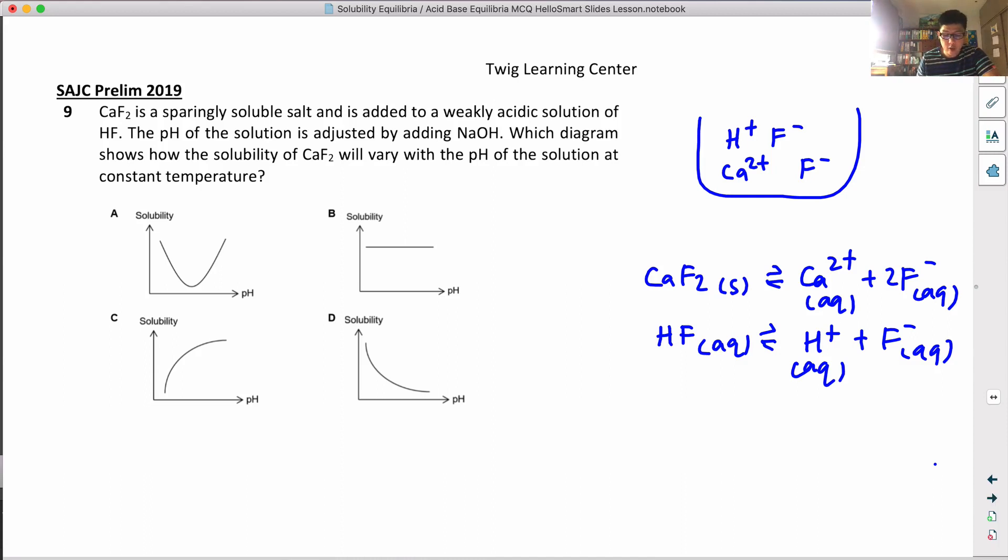Calcium fluoride is a sparingly soluble salt added to a weakly acidic solution. In this solution, there's H⁺, F⁻, and Ca²⁺. The pH of the solution is adjusted by adding sodium hydroxide, so you're adding OH⁻. The question asks which diagram shows how the solubility of calcium fluoride will vary when you add OH⁻.